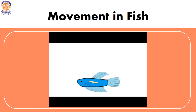Whenever the fish needs to go to the bottom, it deflates the swim bladder — meaning it empties out the air — and as a result it sinks to the bottom of the water column.